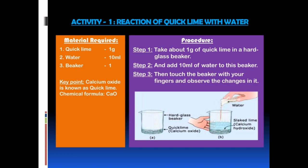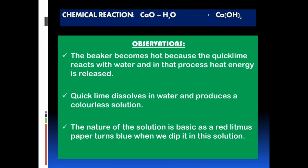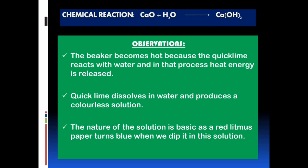Step 2: Add 10 ml of water to the beaker that already contains 1 gram of quicklime. A chemical reaction takes place. Step 3: Touch the beaker with your fingers and observe the changes in it. The chemical reaction that takes place is: Calcium oxide + water → calcium hydroxide, i.e., CaO + H₂O → Ca(OH)₂. Observations: the beaker becomes hot because quicklime reacts with water and heat energy is released. Quicklime dissolves in water and produces a colorless solution. The nature of the solution is basic — a red litmus paper turns blue when dipped in this solution.